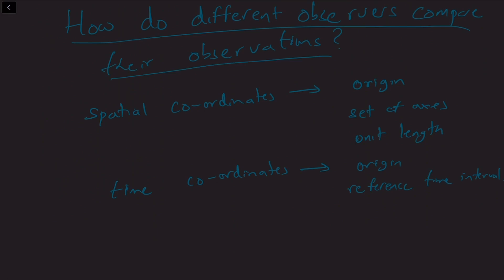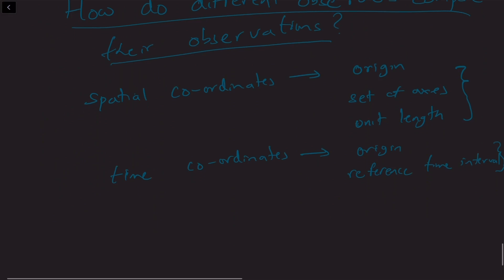Now, intuitively, we expect that differences in these choices — the choice of origin, the choice of set of axes, the choice of unit length, or the choice of origin and reference time interval — these choices should not matter in our description of the physical world. And indeed, this is true for a set of observers whom we think of as inertial observers, that is, observers who are in a state of uniform motion relative to each other.